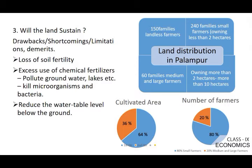How is land distributed among different categories of farmers? Generally we divide farmers into four categories: number one, landless farmers; number two, small farmers; number three, medium farmers; and number four, large farmers. In Palampur, out of 450 families in total, 150 families are landless farmers with no land, and 240 families are small farmers with less than two hectares of land.